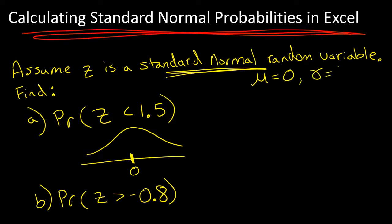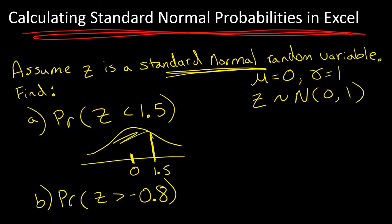So z is distributed normal(0, 1). For the probability that z is less than 1.5: 1.5 would be to the right of zero, and less than 1.5 means this area to the left of 1.5. So how do I calculate that in Excel?